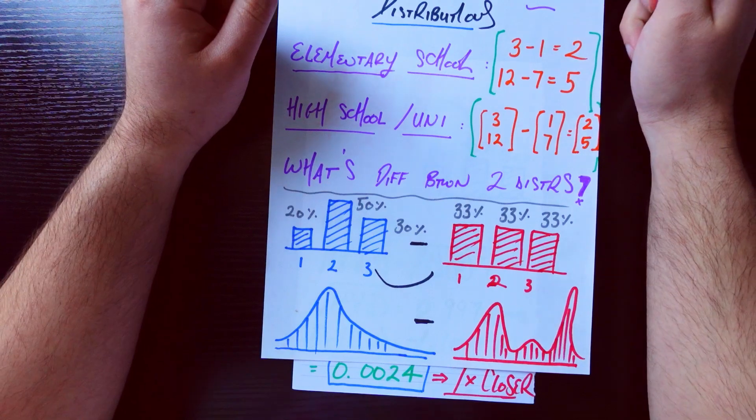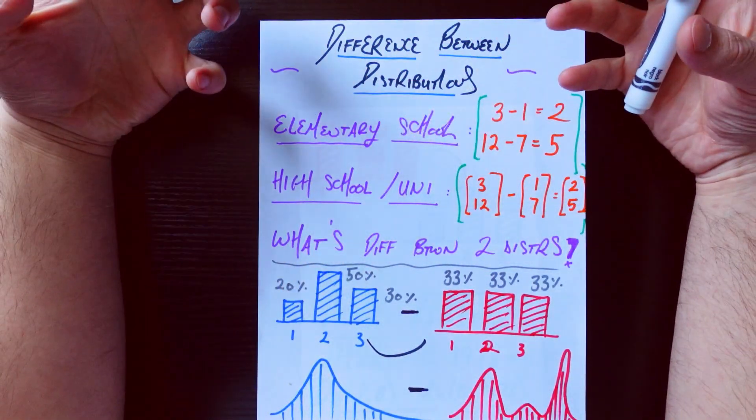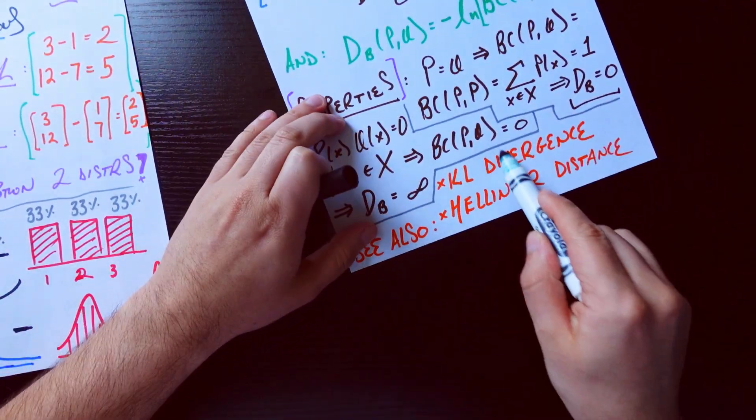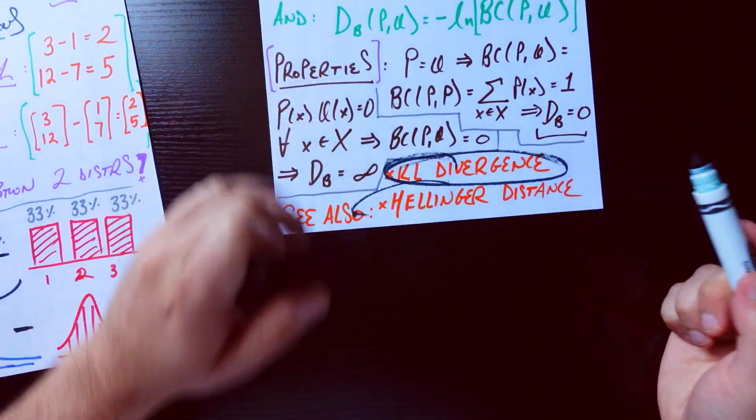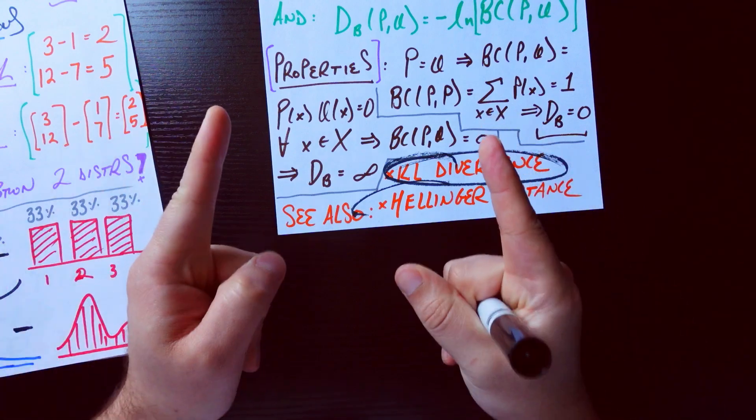So that's it. Just wanted to kind of show you this really cool technique to look at the difference—get a single number that captures the difference between two distributions. But at the same time, totally note that this is not the only way to do it. I would encourage you to check out these other techniques as well. All right, so if you like this video, please like and subscribe, and I'll see you next time.